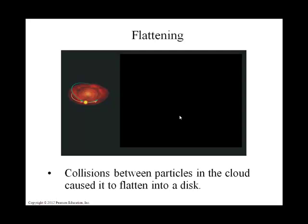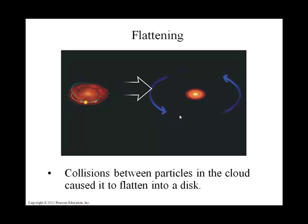Not only did it start out as a spherical blob and rotate more quickly as it contracted, but it also flattened out. This flattening is related to all the little particles colliding and forming a disk — what we call a protoplanetary disk. 'Proto,' like a prototype, means the thing before the real thing, so protoplanetary means it's the stage before the planets.